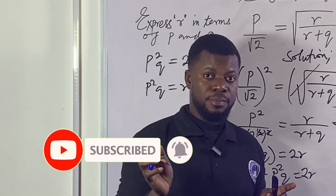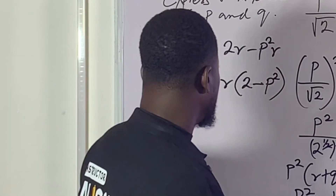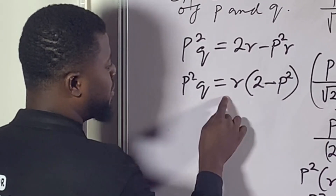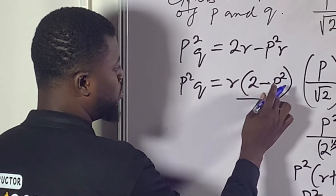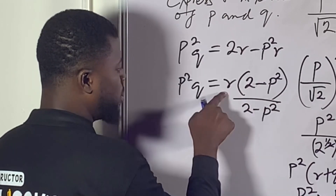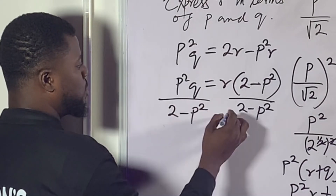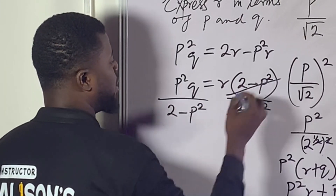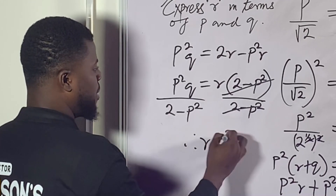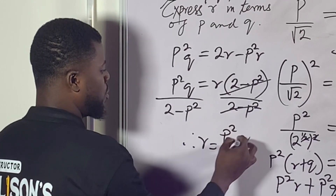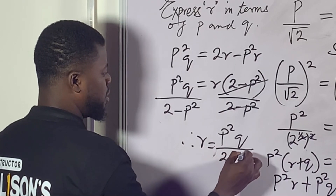What we need to do to get the final answer is to divide both sides by (2 minus p squared), because we are looking for arrow. The (2 minus p squared) cancels out, therefore arrow equals p squared q over (2 minus p squared).